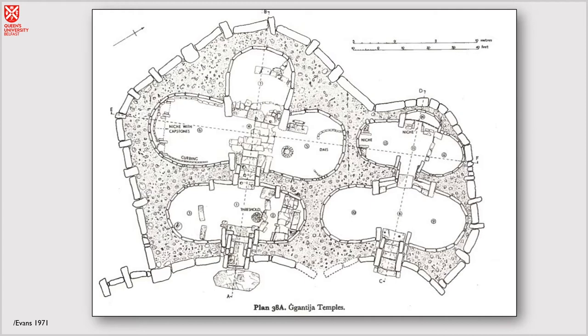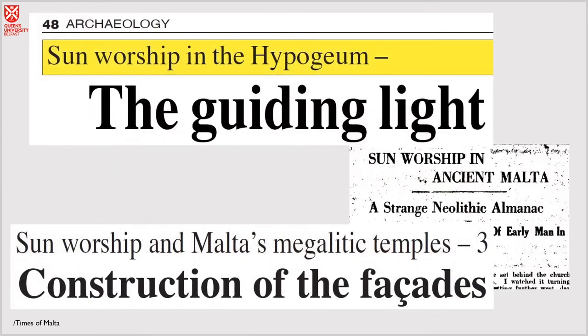And obviously there's lots of theories and lots of hypotheses to do with the monific temples. The one that we're going to be looking at today specifically is to do with astronomical alignments, because you get a lot of these kind of articles in, especially local papers, but also international papers. Sun worship in the Hypogeum, sun worship and Malta's megalithic temples, sun worship in ancient Malta. So a lot of sun worshiping apparently happened in these temples.